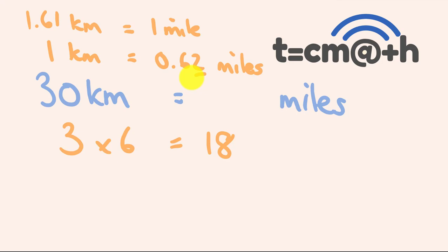Because 0.02 is 1/50th. So 30 divided by 50 is equal to 0.6. And I'll just add these two guys together: 18 plus 0.6 is 18.6 miles. That's 18.6 miles, and that is 99.8% accurate.